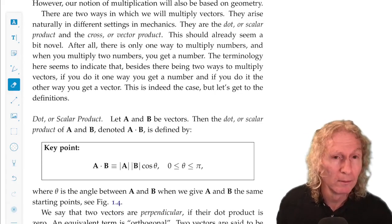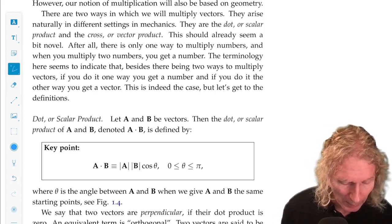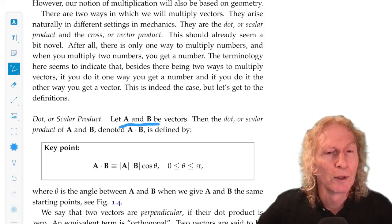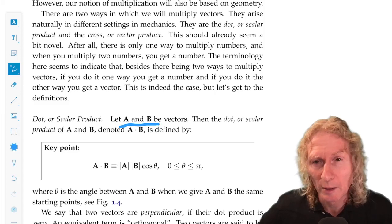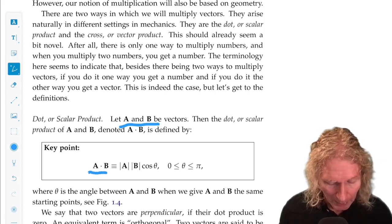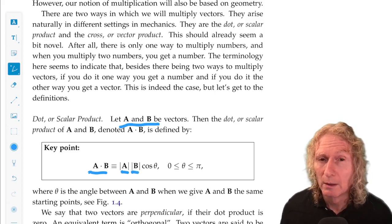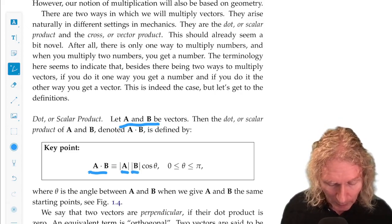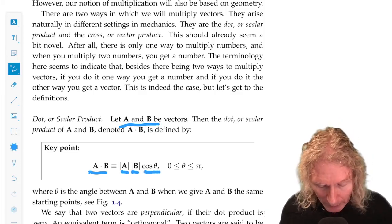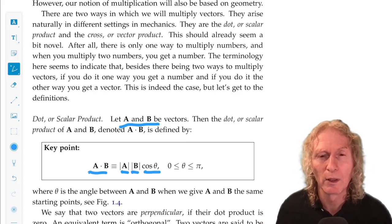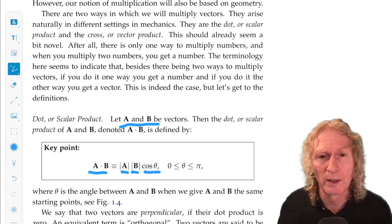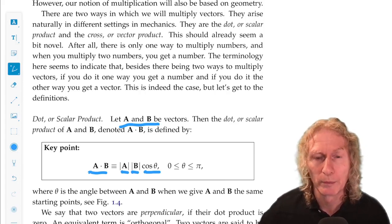Let's consider two vectors, a and b, and we're going to consider how we multiply them together. So the first notion of multiplication is the dot product or the scalar product, and this is a definition. a dot b is magnitude a magnitude b, both of those are scalars, times the cosine of the angle between a and b, but we limit theta to be between 0 and pi. Remember, a and b form a plane the size of a parallelogram, and so we can talk about the angle between them in that plane.